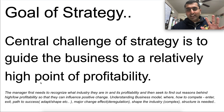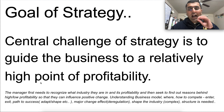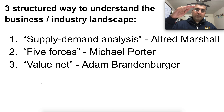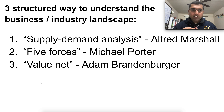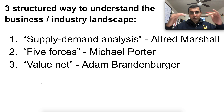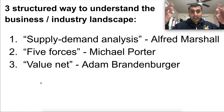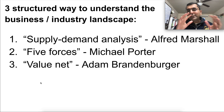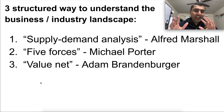This is a complex topic — there are internal changes, external changes, and lots of things changing. To give us some structure for how to think about this, there are three key things from this chapter: three ways to understand the business and industry landscape. The first, historically, came from Alfred Marshall — supply-demand analysis. It was then evolved into the five forces framework, evolved further by Michael Porter, and then evolved into the value net by Adam Brandenburger. These were incremental ways to structure your thinking to analyze how a business or industry works.